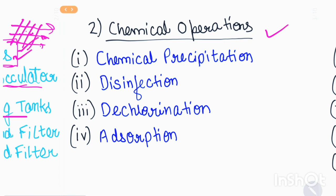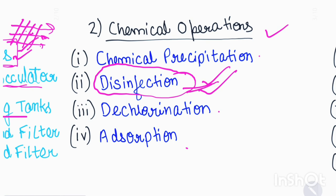Then we come to the chemical processes. Chemicals are used here. The four major chemical processes are: chemical precipitation, disinfection, dechlorination, and adsorption. These are the main chemical operations in the sewage treatment plant.